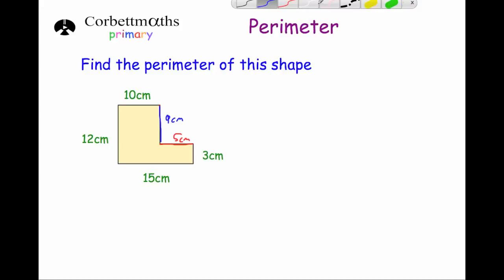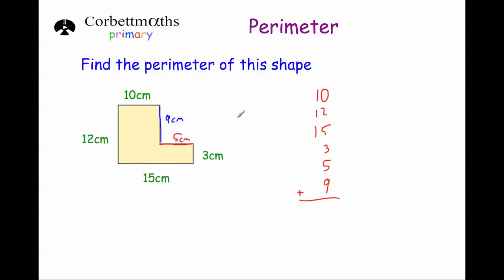Now we can work out the perimeter by adding all sides together: 10 plus 12 plus 15 plus three plus five plus nine. Make sure you check you've got them all — 10, 12, 15, three, five, and nine. Sometimes students make a mistake by missing out one of the numbers or writing the same one down twice. Adding the units: zero plus two is two, plus five is seven, plus three is 10, plus five is 15, plus nine is 24 — put the four down, carry the two; one plus one plus one plus two is five. So the answer is 54 centimeters.